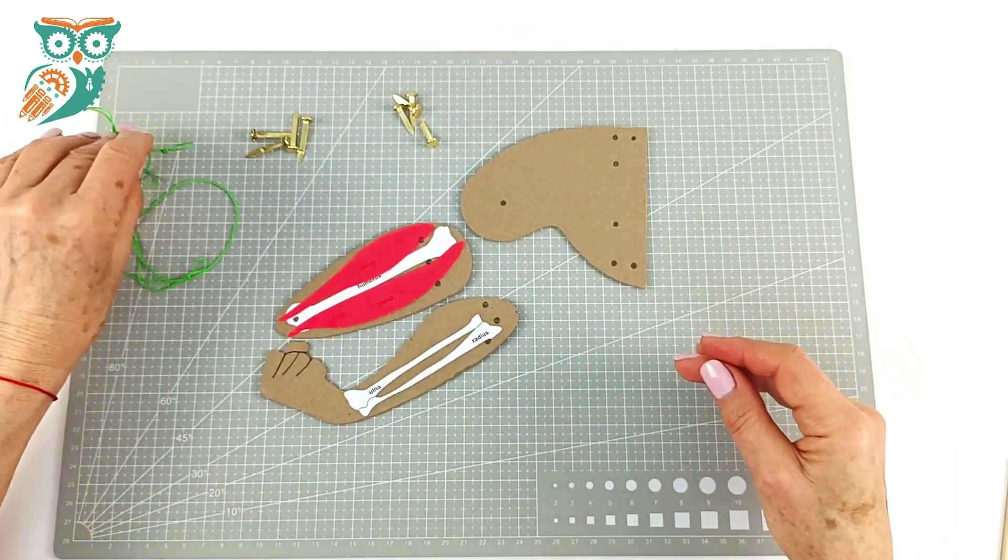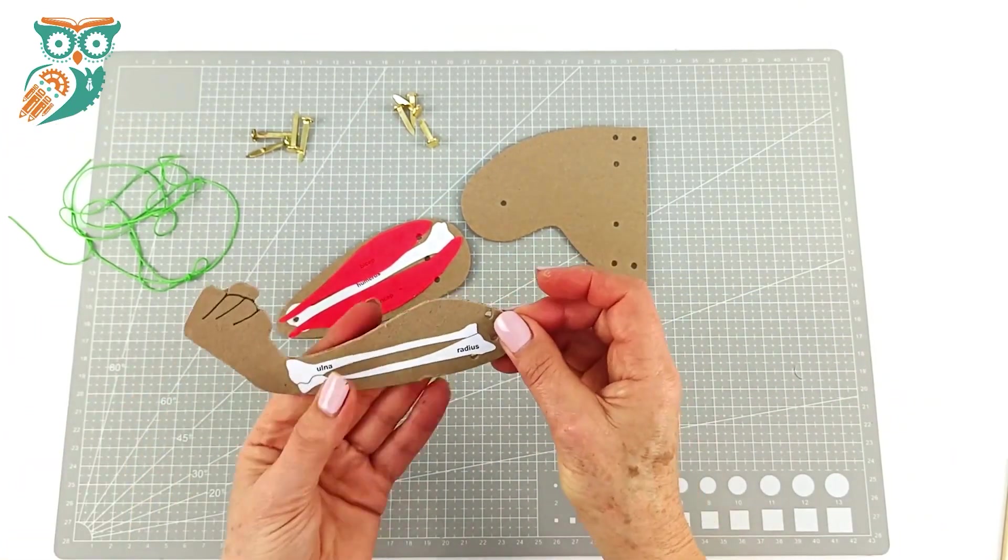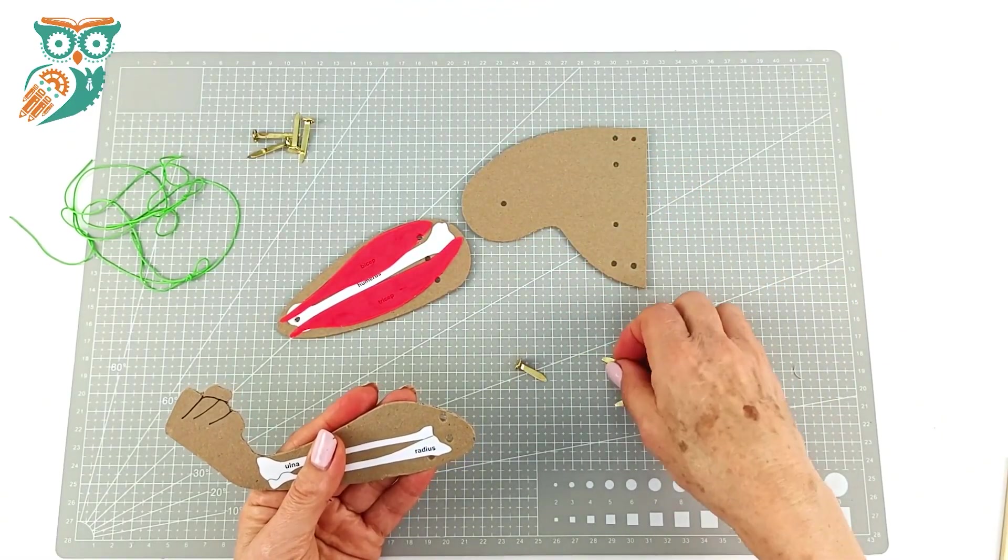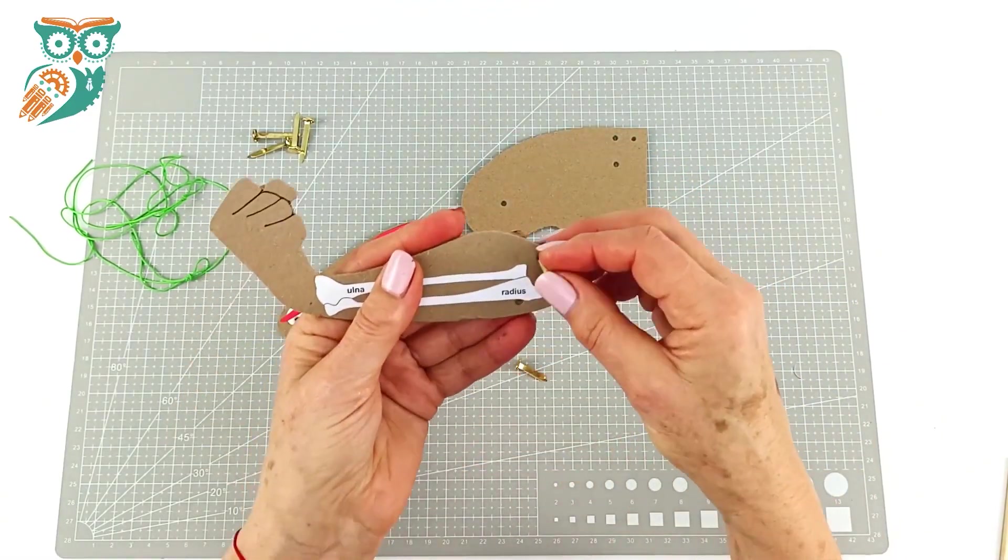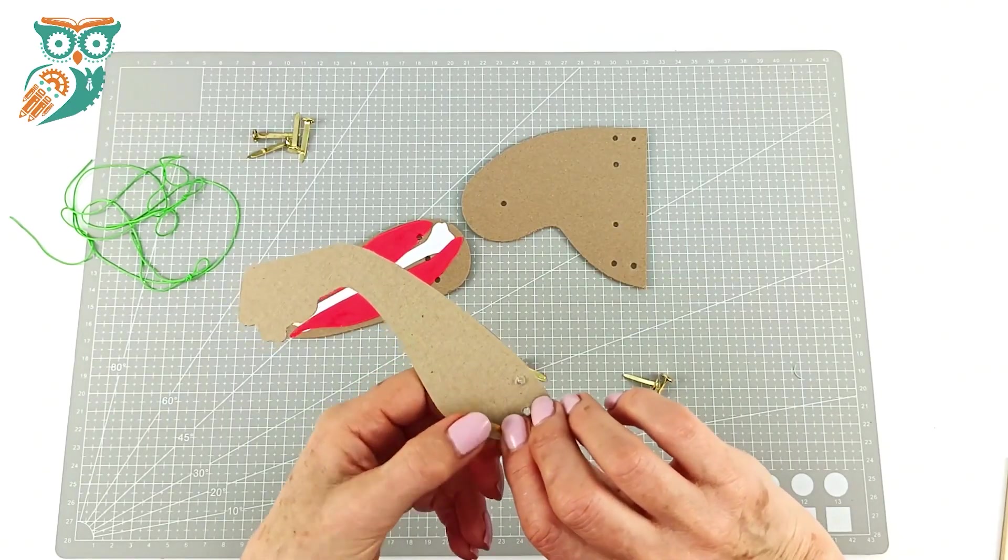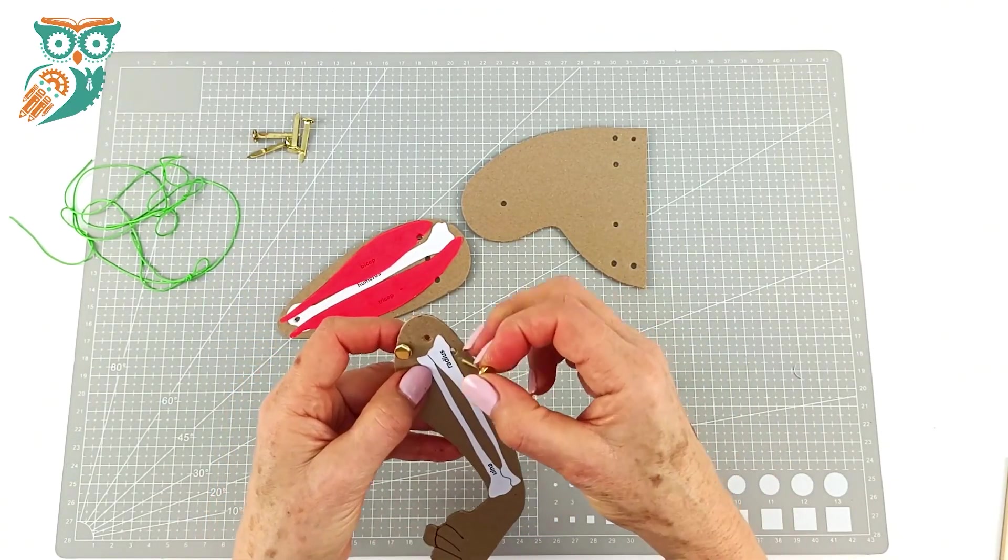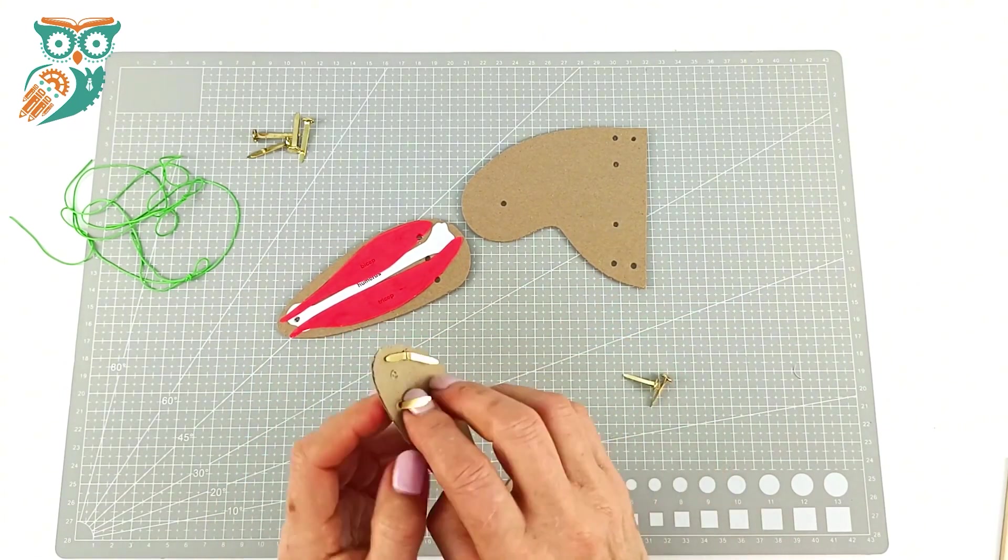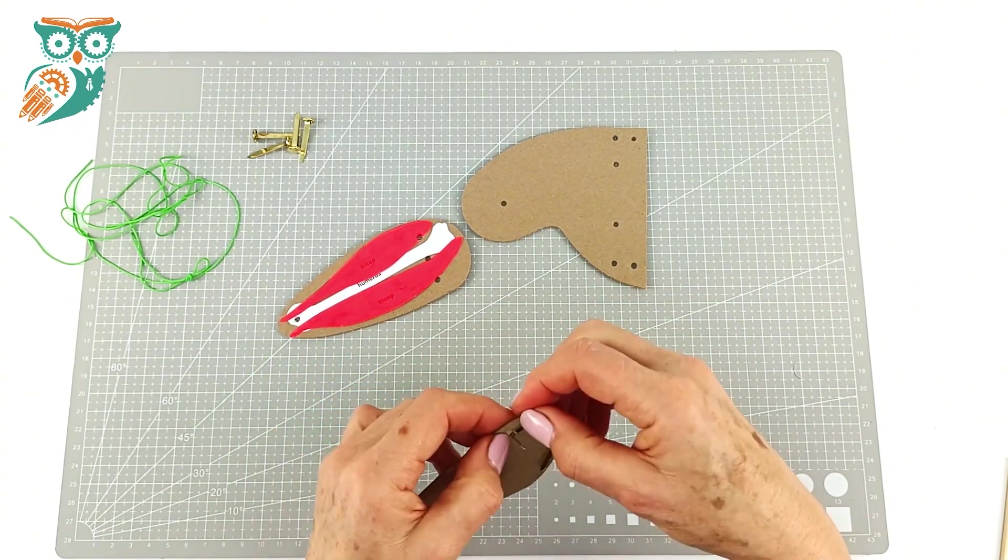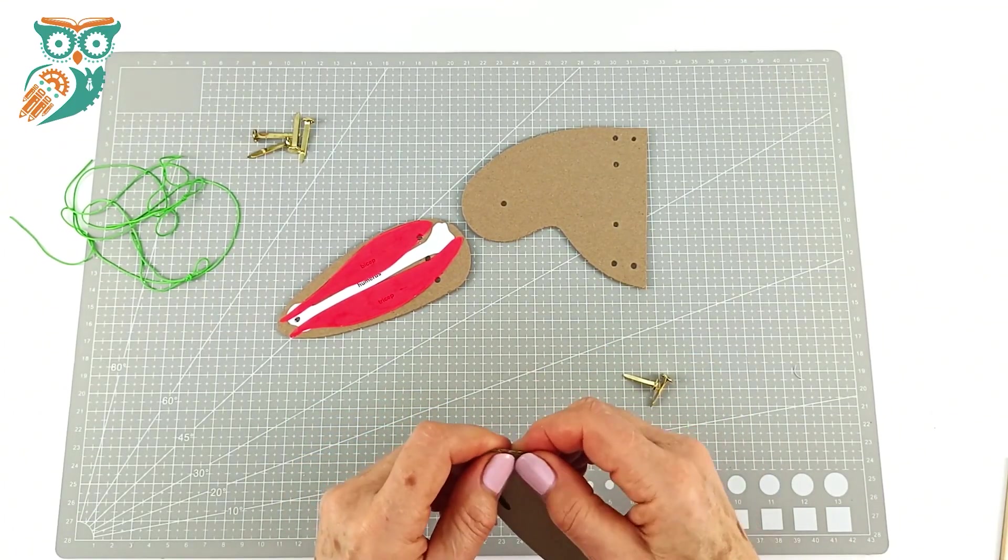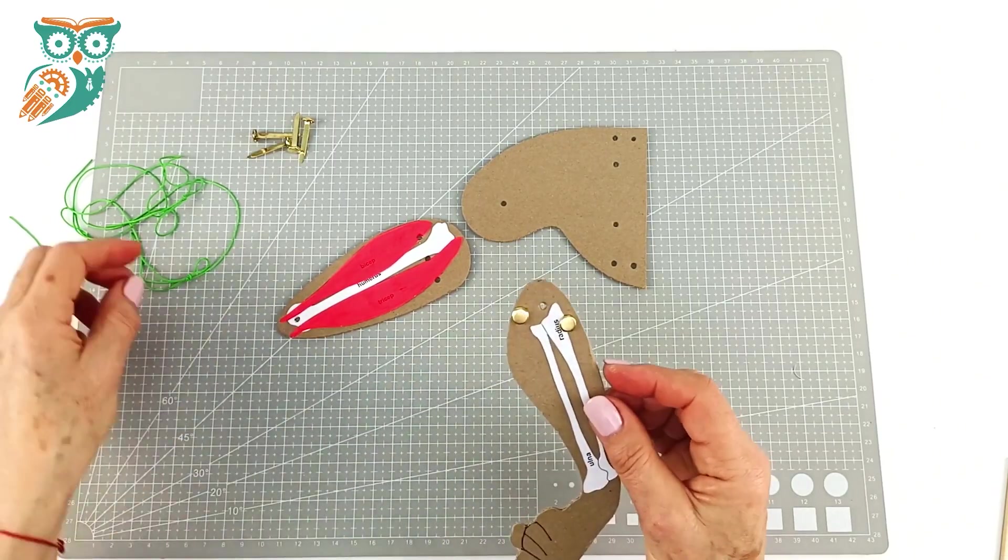And our paper fasteners are two sizes. One is a full inch long and the other one is three quarters of an inch. So we're going to start with the shorter of the paper fasteners and we're going to put them in the two outer holes here on the forearm. And we're just going to pull the backs open like that to hold them in place.